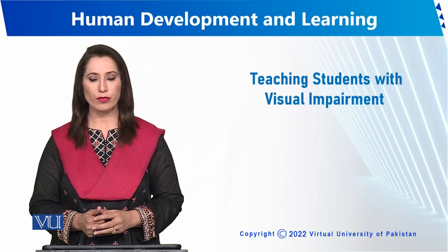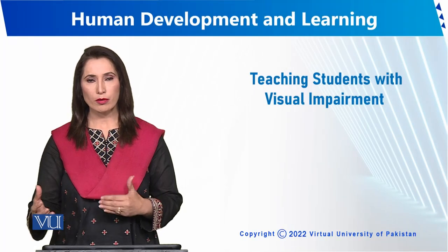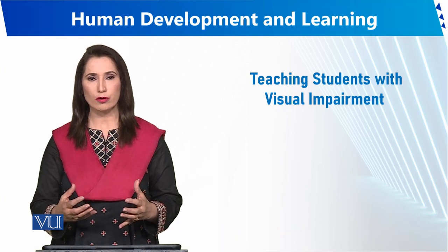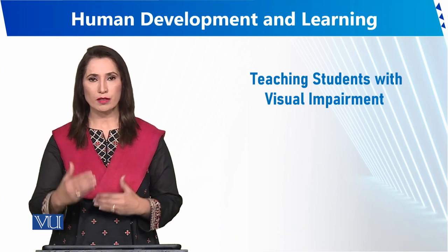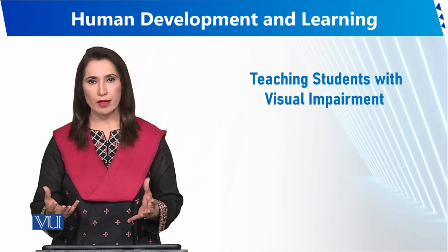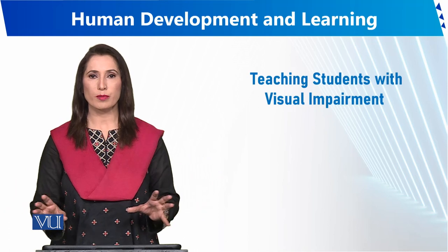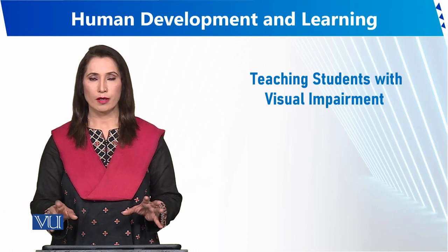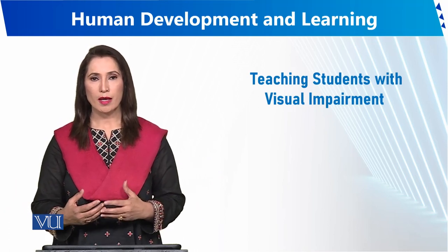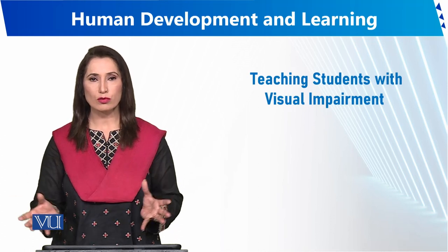Teaching students with visual impairment addresses vision issues in children. There are three levels: mild, moderate, and severe. Based on these levels, children are placed in multiple schools and teachers are trained accordingly. Children who are mild or moderate are sent to regular schools.